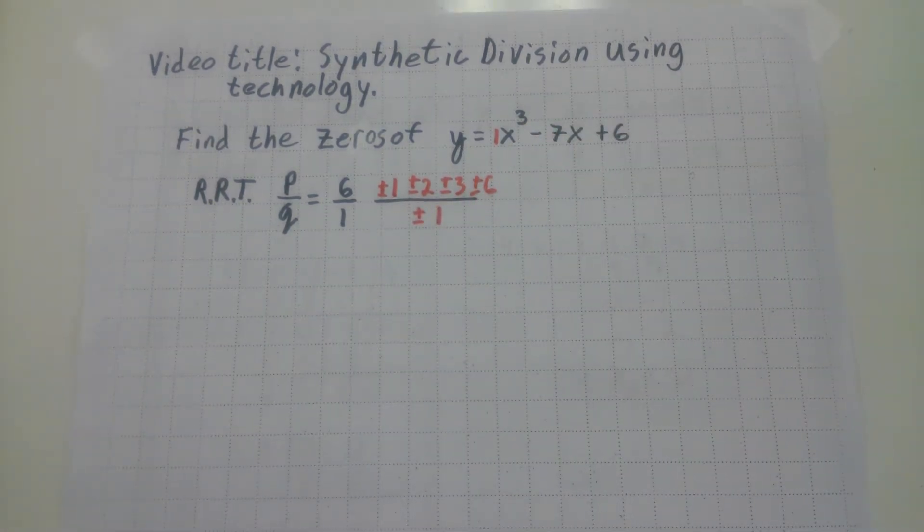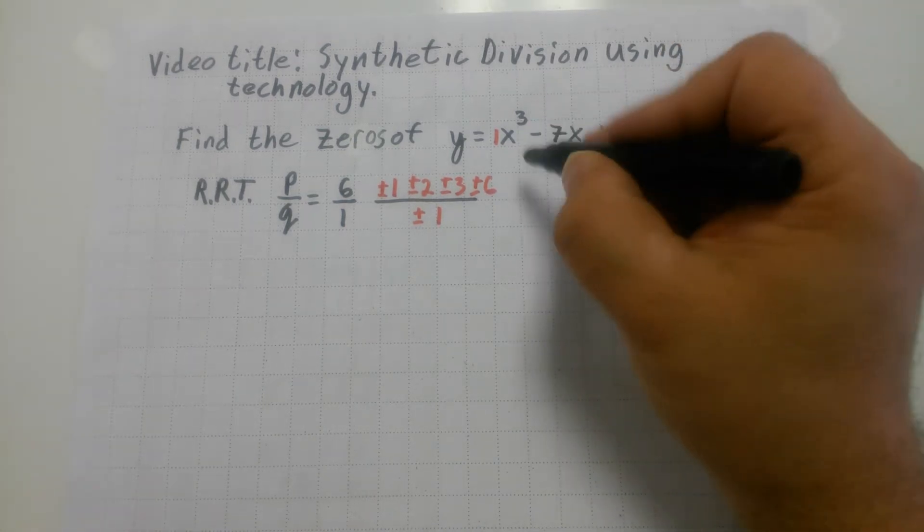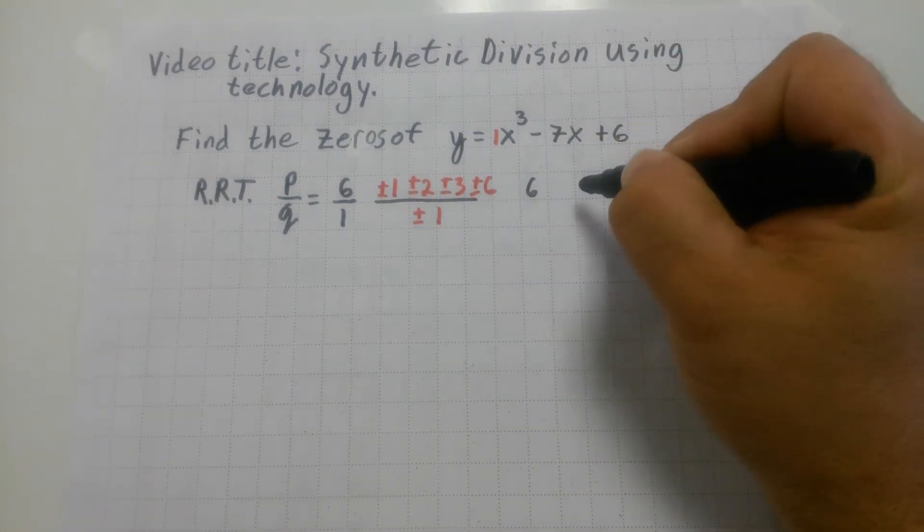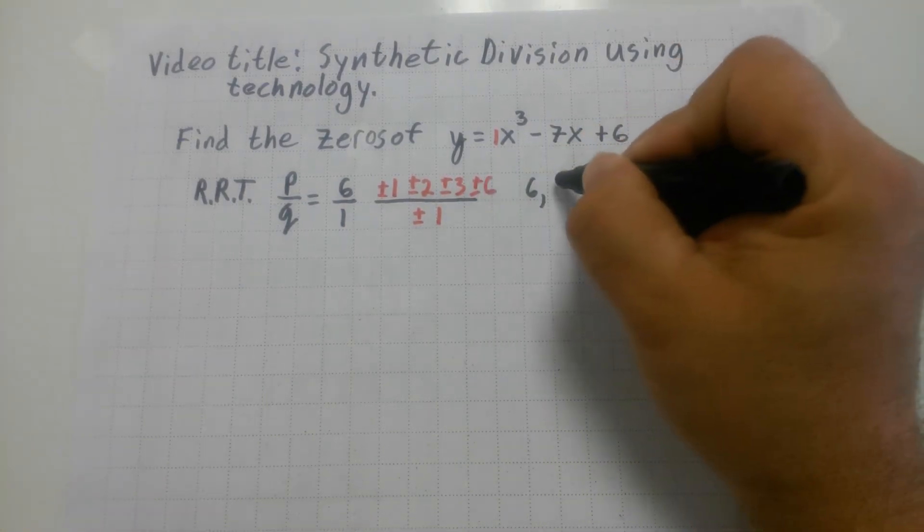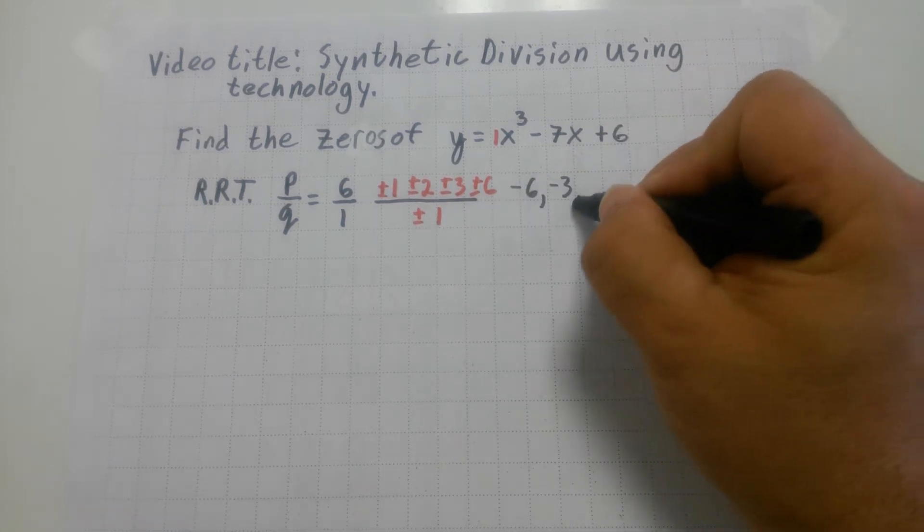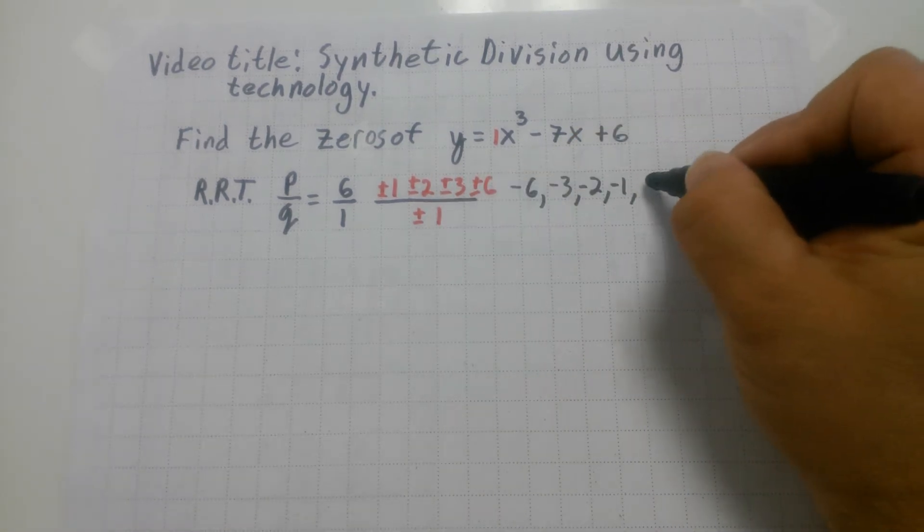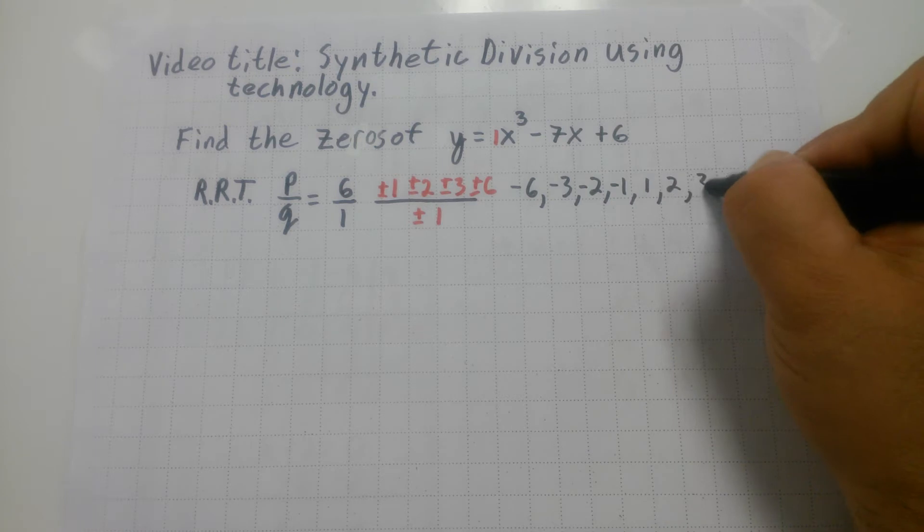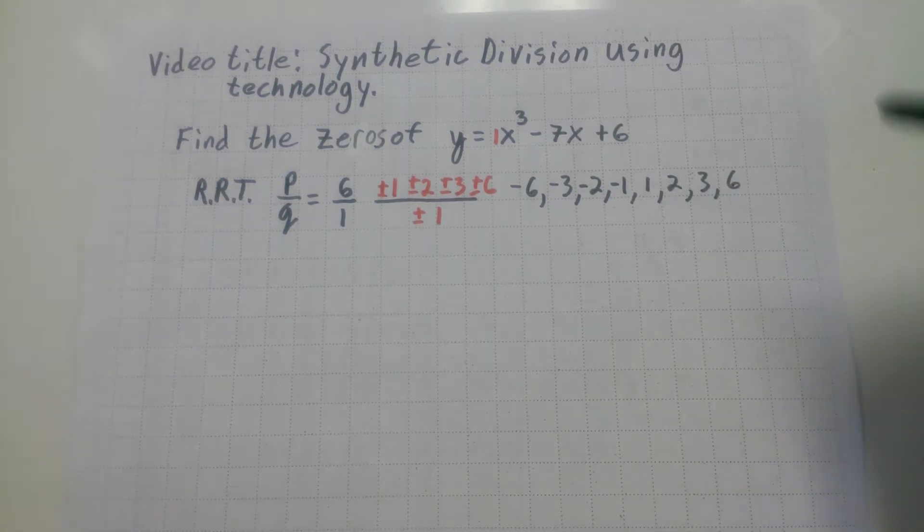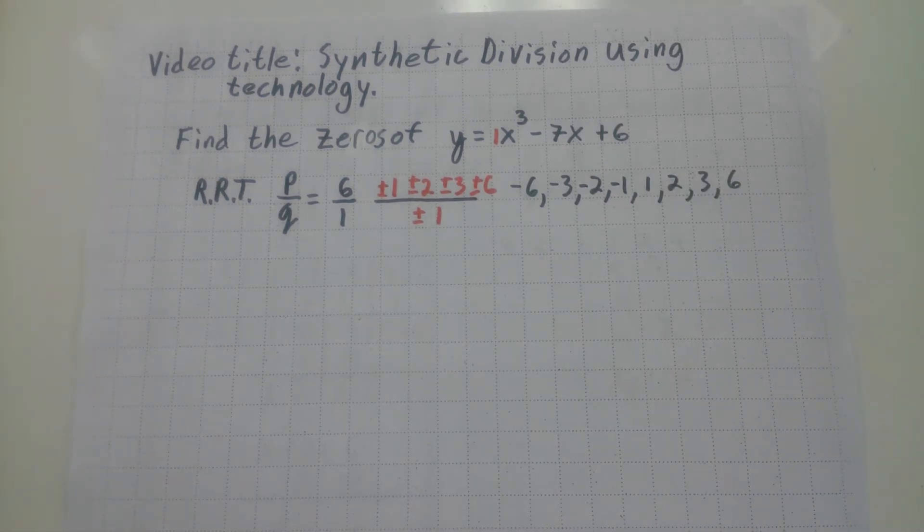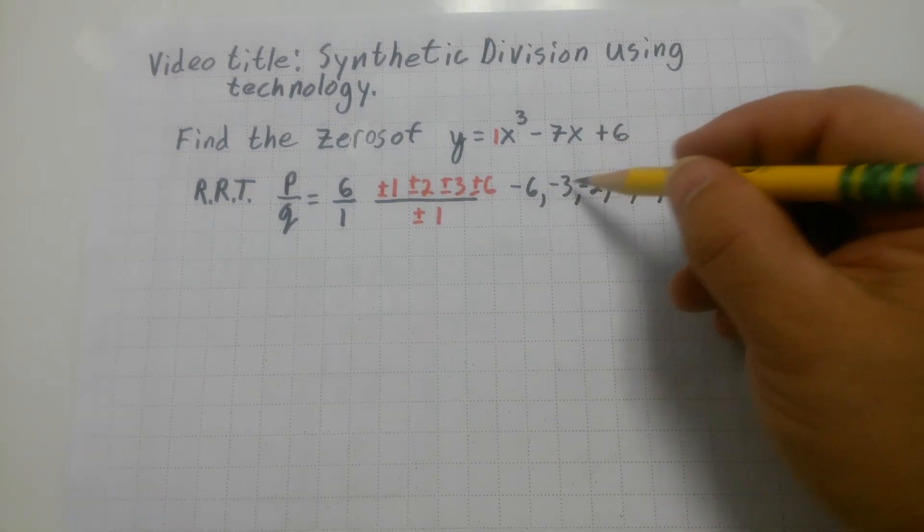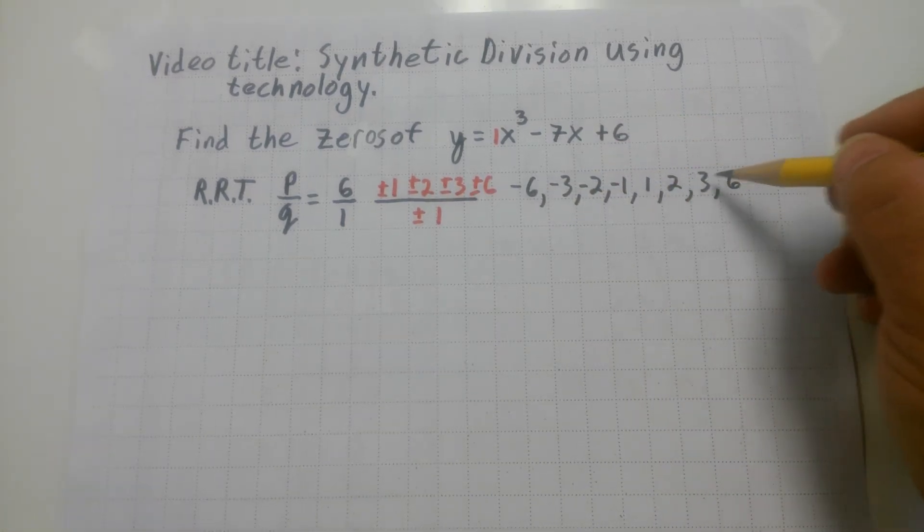This is going to generate a whole bunch of possible solutions. That can give me six, negative six, I'm sorry, negative three, I'm doing it from least to greatest, negative two, negative one, one, two, three, and six. So if I was actually doing this by hand, I would have this many guesses, one, two, three, four, five, six, seven, eight.